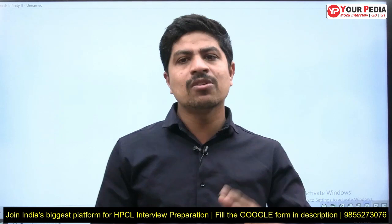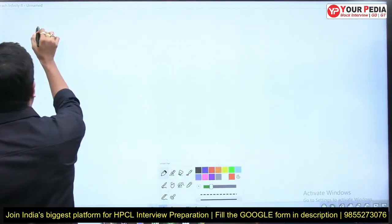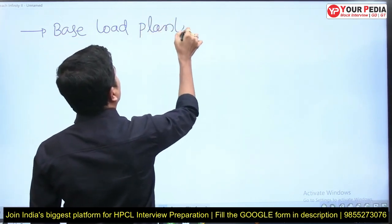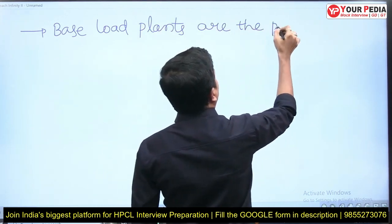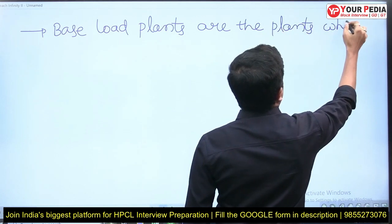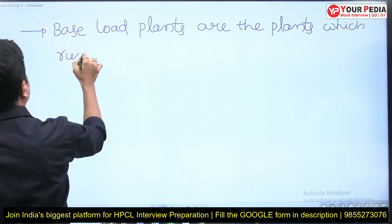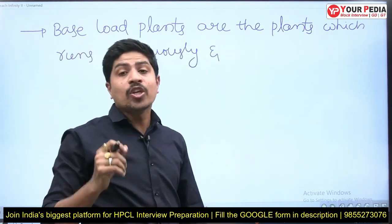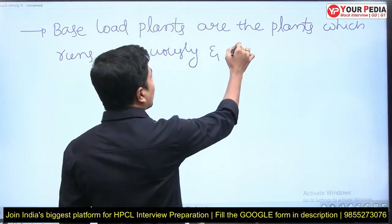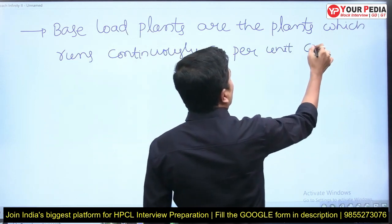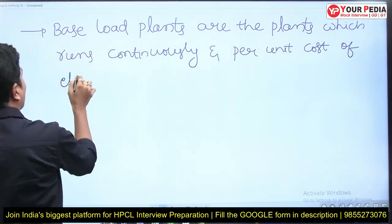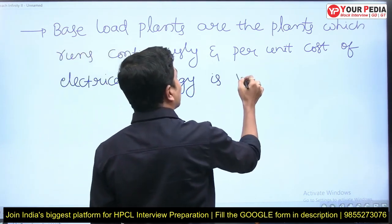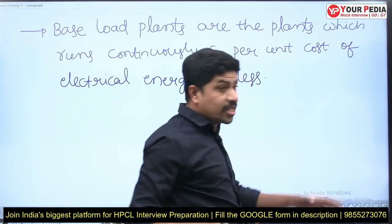Base load plants are the plants which run continuously, and the per unit cost of electrical energy is less. So these only can be used as base load plants.